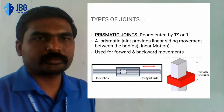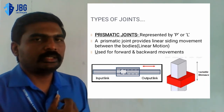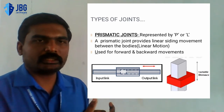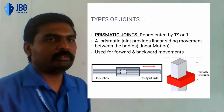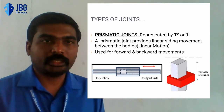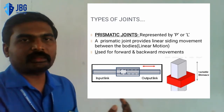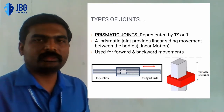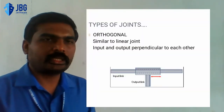Let's discuss the prismatic joint first. In the figure you can see the prismatic joint — there is an input link and an output link. The output link can be moved inward and outward, giving a linear motion. A prismatic joint is represented by the alphabet letter P, or sometimes L. It provides linear sliding motion between the bodies, used for forward and backward movements. In the second figure you can see the variable distance which can occur in a prismatic joint.